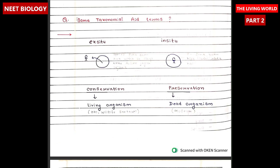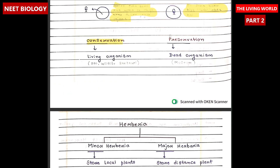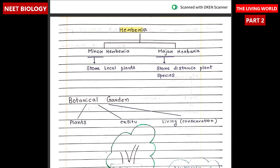Some taxonomical aid terms: ex situ means species that are born at another place and shifted to a different place. In situ means the species are born and kept at the same place. The difference between conservation and preservation is: conservation is done for living organisms and preservation is done for dead organisms. Herbaria are of two types: minor herbaria, which store local plants, and major herbaria, which store distant plant species.